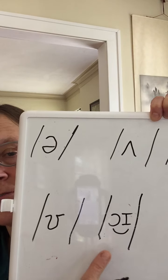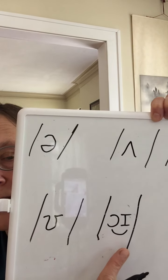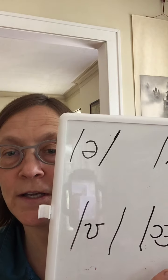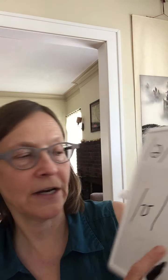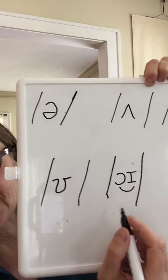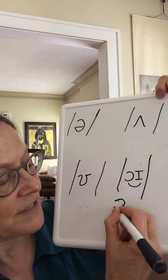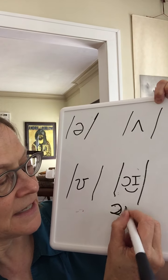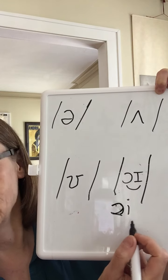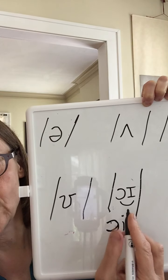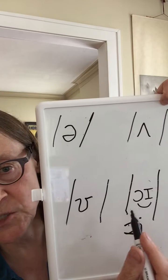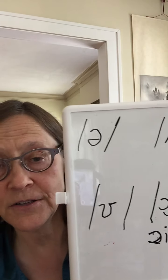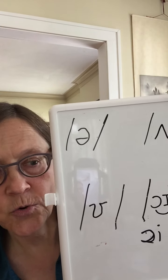This is the last diphthong for you to know. This is OY, as in 'boy,' 'toy,' 'avoid.' You have to use the correct symbol — if you use the wrong components, you're not representing this sound. Speech pathologists usually draw a line under all diphthongs. That's OY, and that's it.